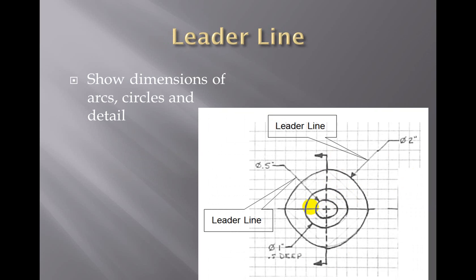Leader lines - we often have to show diameters and radii of circles and arcs. Leader lines are these arrows that show the diameter of the circle. The leader line is this line that extends down to show which circle we're talking about. For this circle here that the leader line is pointing to, it also tells you that this circle is half an inch deep.